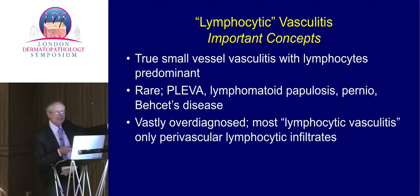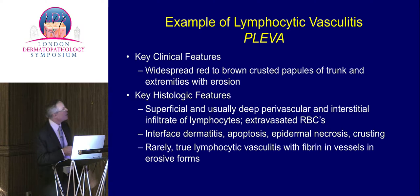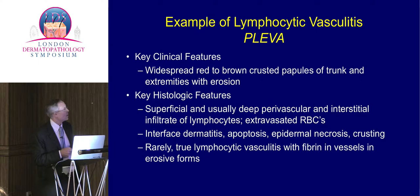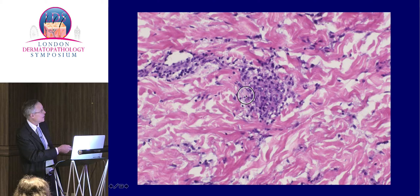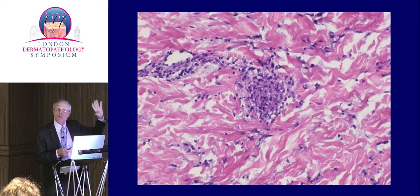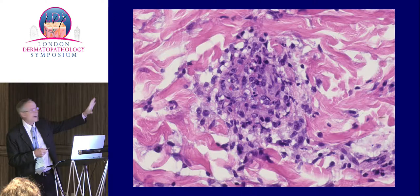Lymphocytic vasculitis is way overdiagnosed — it's relatively rare, seen in only a few diseases. Most often it's just perivascular lymphocytic inflammation getting called vasculitis. Without thrombosis and fibrin in the vessel walls, it's really not lymphocytic vasculitis. We do see it occasionally in pityriasis lichenoides et varioliformis acuta, which presents with widespread scaly crusted papules and shows interface dermatitis with epidermal necrosis and overlying parakeratosis. Occasionally true lymphocytic vasculitis is seen — fibrin in the lumen and wall with lymphocytes, no neutrophils — but this is relatively uncommon and you shouldn't call it unless you really see these changes.